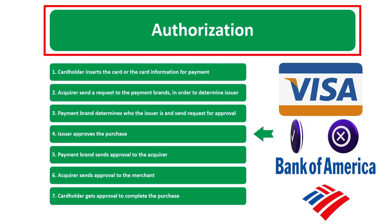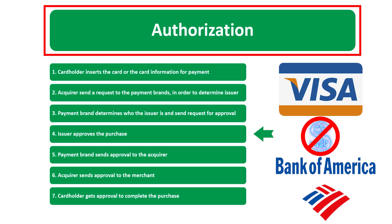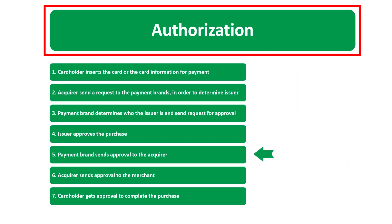Step number four: the issuer — your Bank of America — either approves or denies the purchase. The issuer has information regarding whether you have enough funds in your account to cover the value of that transaction. The issuer will say yes, this person has enough money, transaction approved — or no, there are not enough funds, so we cannot approve that transaction.